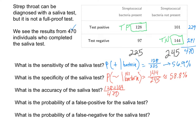So 128 plus 144 as a fraction gives us 272 out of 470. If you wanted to calculate this as a percent, this is approximately 57.9% — a little over half. This test is a little over half accurate, closer to 57–58%, meaning that it correctly identified about 58% of those individuals who came in.